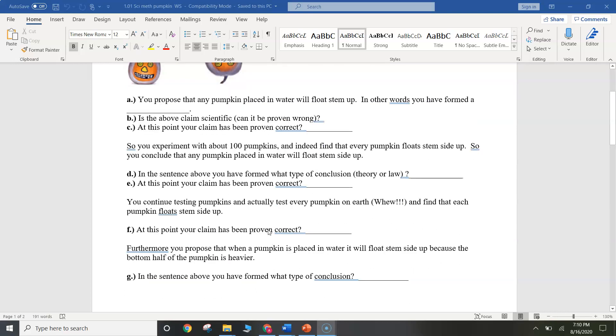Next, we're going to propose an idea that when a pumpkin is placed in water, it floats stem side up because the bottom half of the pumpkin is heavier. Here we're trying to explain why pumpkins float stem side up in the water, and so we're moving from a scientific law to a scientific theory. Anyway, enjoy the rest of your day.